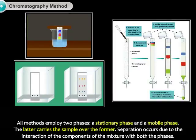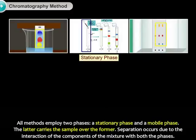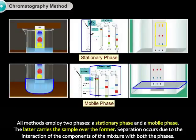All methods employ two phases, a stationary phase and a mobile phase. The latter carries the sample over the former. Separation occurs due to the interaction of the components of the mixture with both the phases.